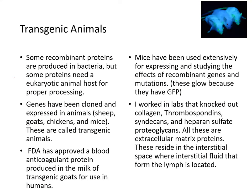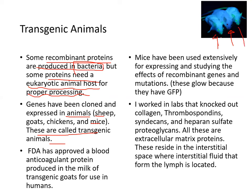Transgenic animals are used to study functions of different proteins. Virtually all recombinant proteins can be produced in bacteria, but some proteins need eukaryotic hosts for proper post-translational processing. Genes have been cloned and expressed in animals like sheep, goats, chickens, and mice — these are all called transgenic animals. The FDA has approved a blood coagulant protein to be produced in the milk of transgenic goats for use in humans. Here's an example: these mice are expressing the green fluorescent protein.